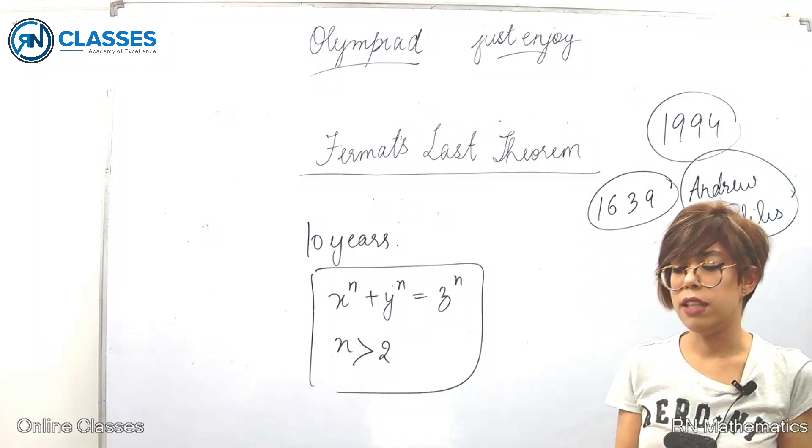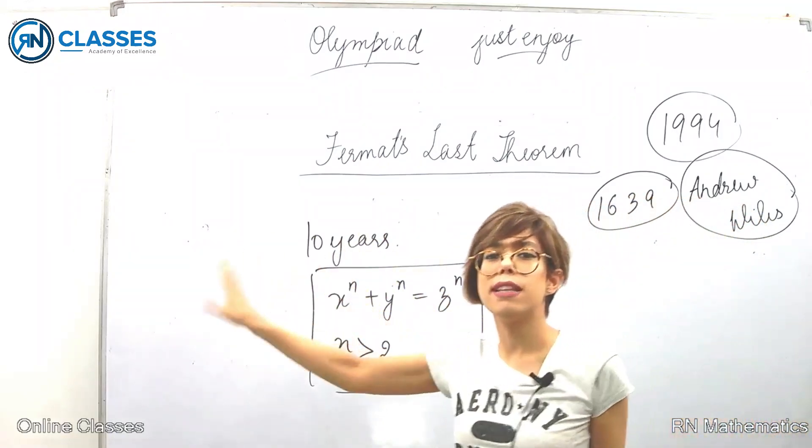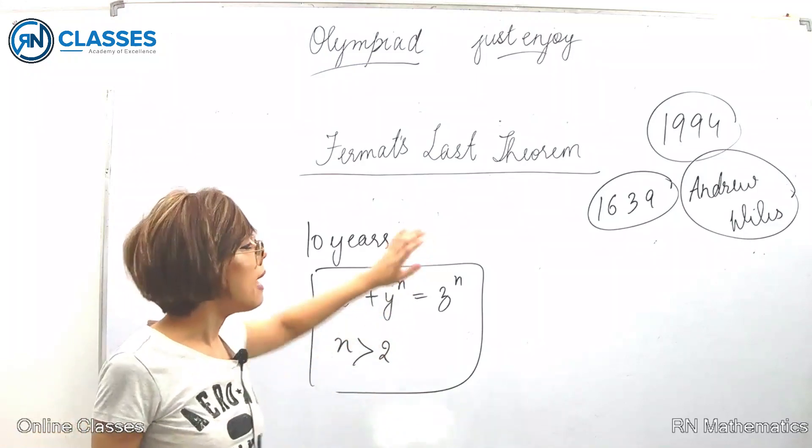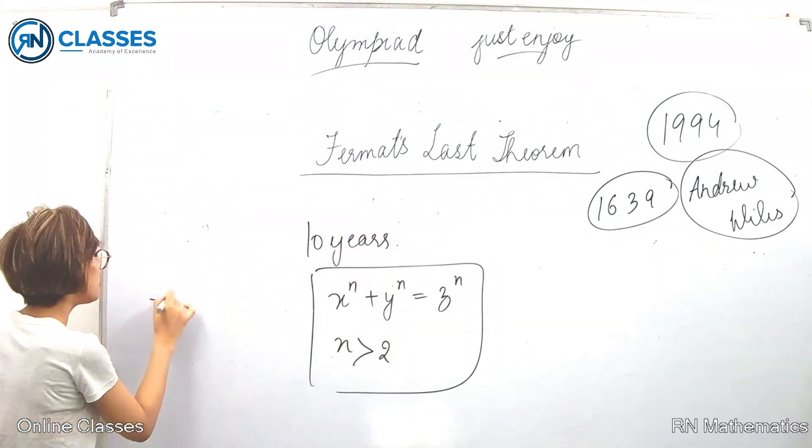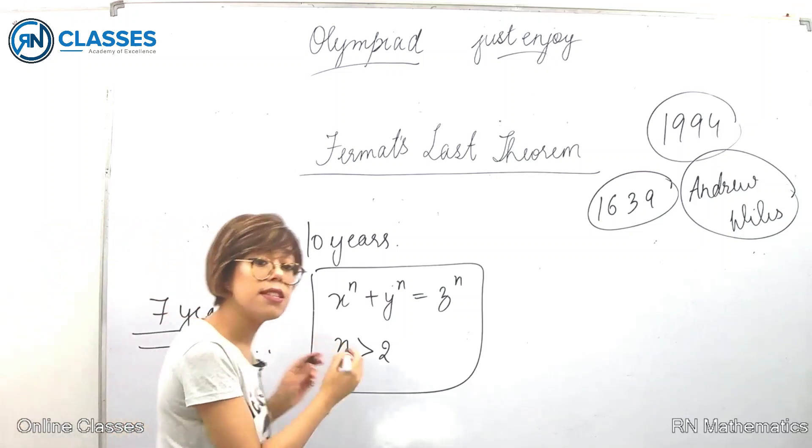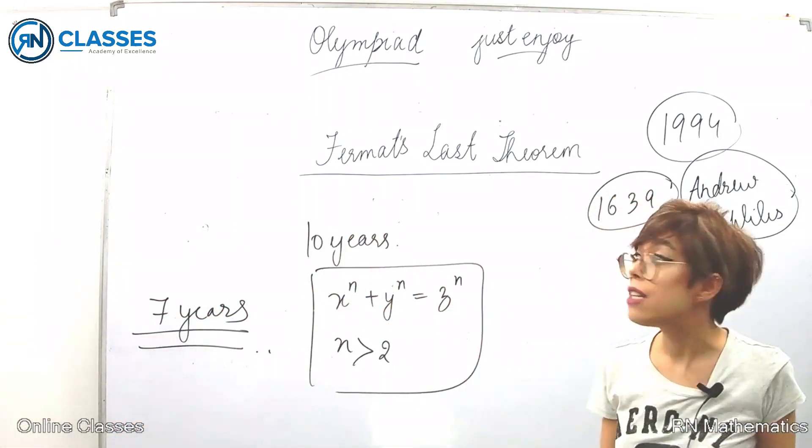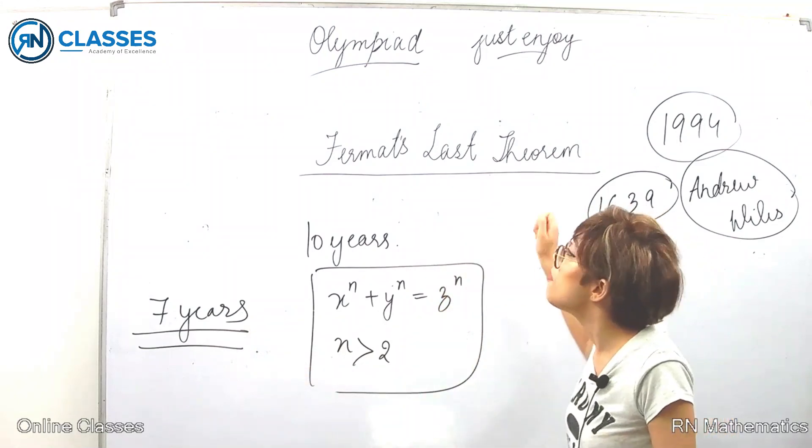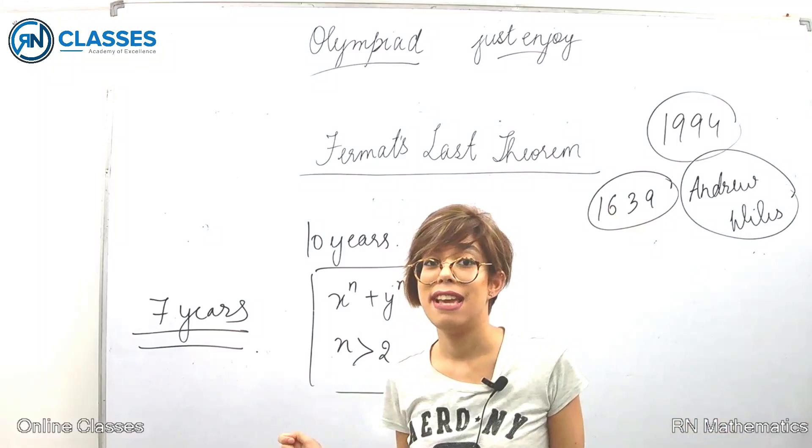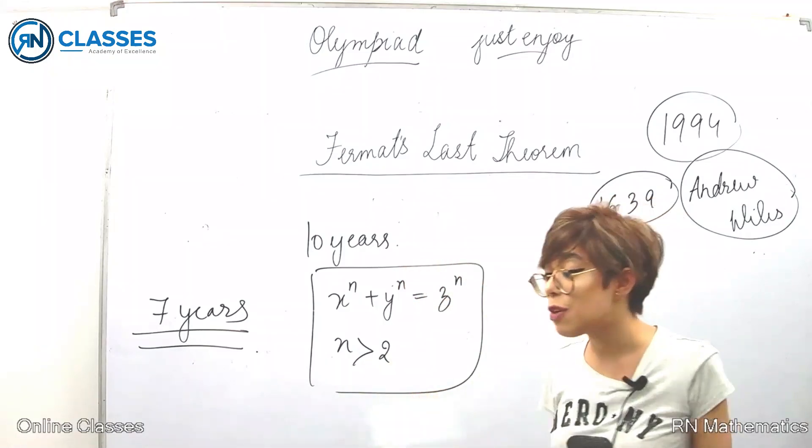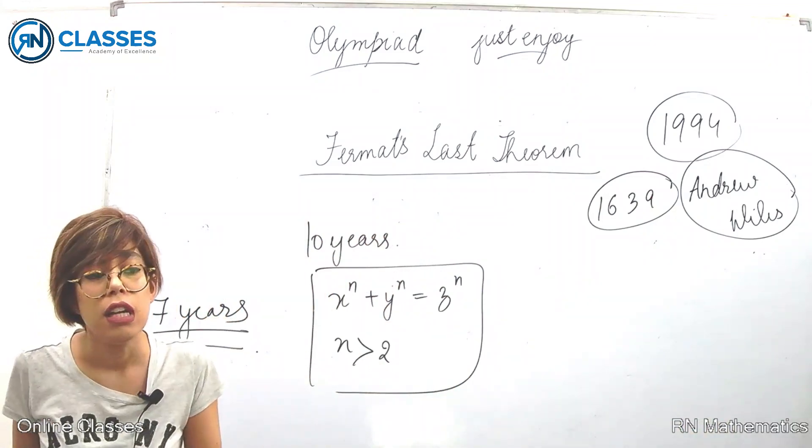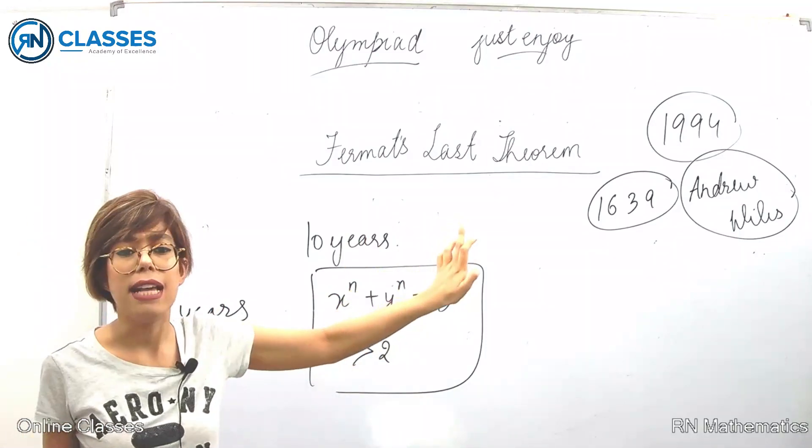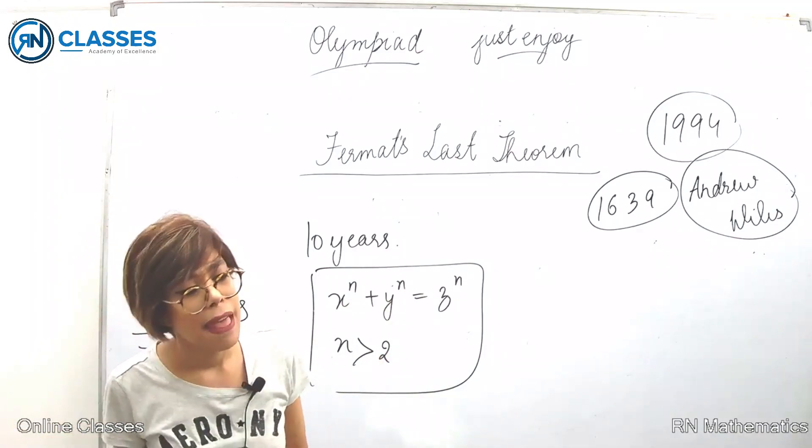We usually give up and look at the solution online or ask the teacher. But Andrew Wiles went into isolation for seven years. Seven years. He lived and breathed this problem for seven years. Can you imagine doing that? Persevering or proving a single result for seven years. That's very incredible. That's the sort of determination and dedication we should have or at least aspire towards.